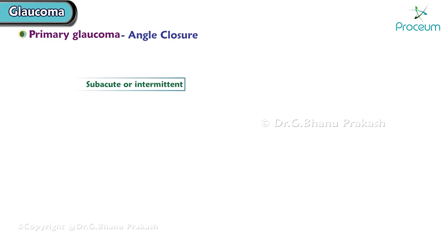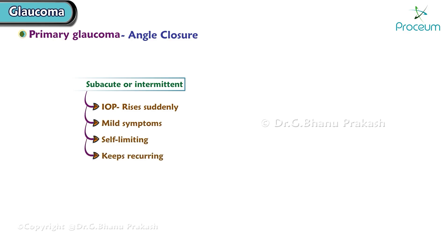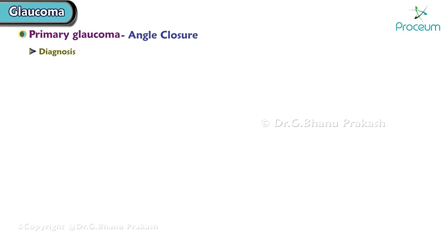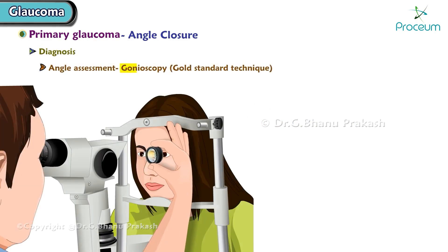In subacute or intermittent angle closure glaucoma, intraocular pressure rises suddenly with mild symptoms. It is self-limiting and keeps recurring. Chronic angle closure occurs over a gradual course of time and the patient mostly stays asymptomatic.